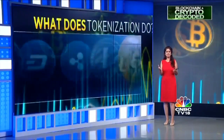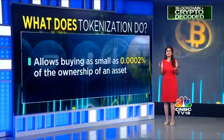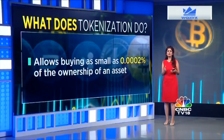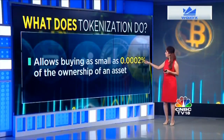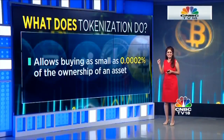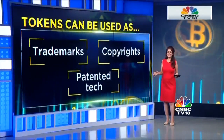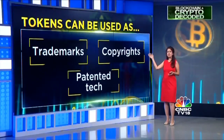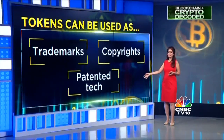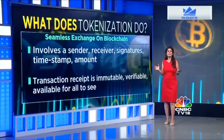So if you want to buy gold or a painting but can't pay in full, you can buy a token equal to as small as 0.0002% of the ownership of that asset. Tokenization can change the way the world works. Tokens can be used as trademarks, copyrights, and patented technologies. It simplifies exchange due to a seamless exchange process on blockchain.